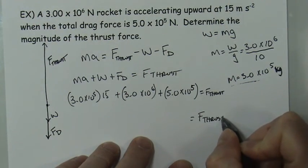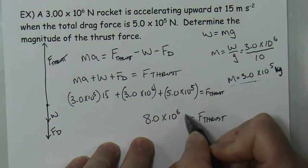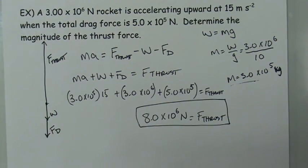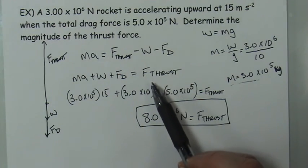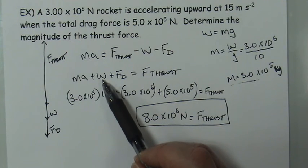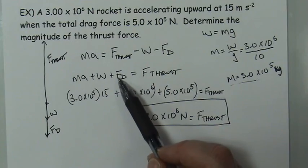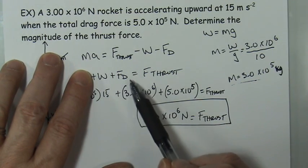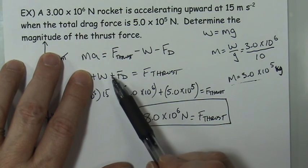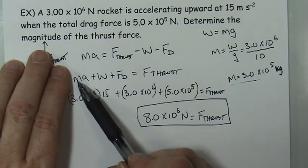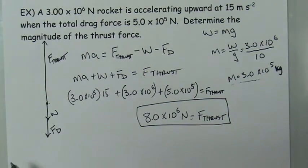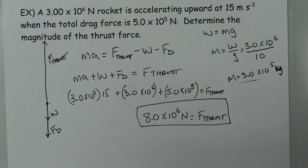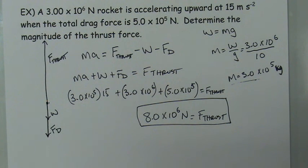Adding all those together gives a total thrust force of 8.0 × 10⁶ Newtons, or 8 million Newtons. The thrust must first counteract the weight and drag — if it only balanced those two, the rocket would hover or move at constant velocity. To actually accelerate upward and pick up speed, it needs that extra force represented by the ma term. This illustrates the key point: Newton's second law is all about acceleration, and combined with kinematic equations it allows you to solve very complex problems.